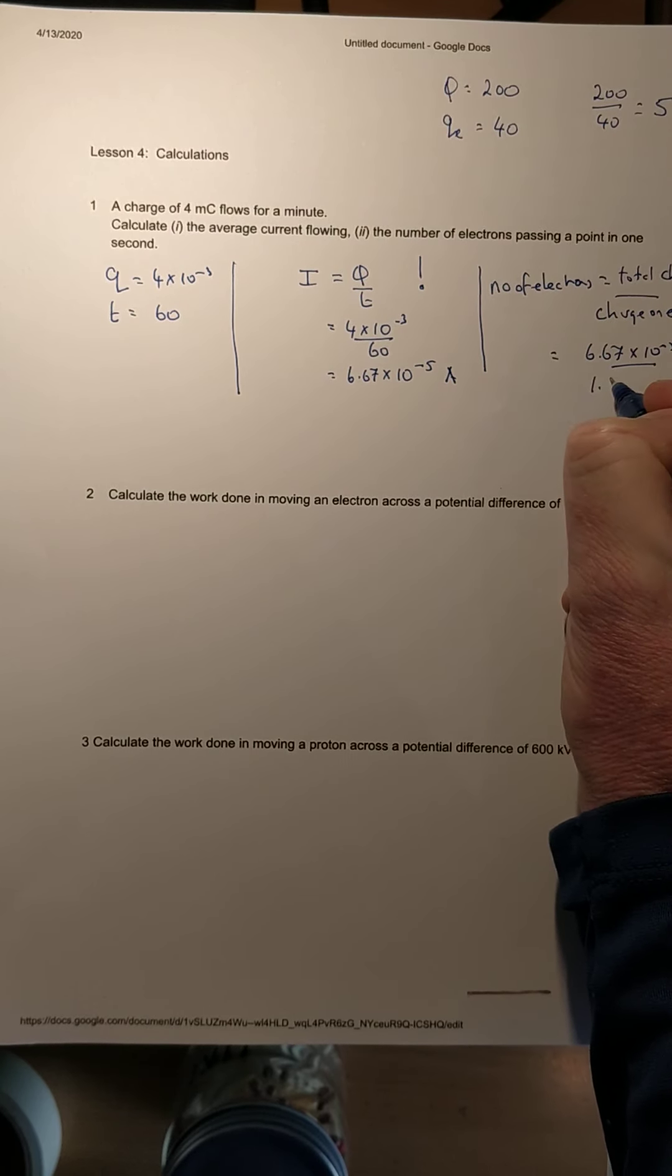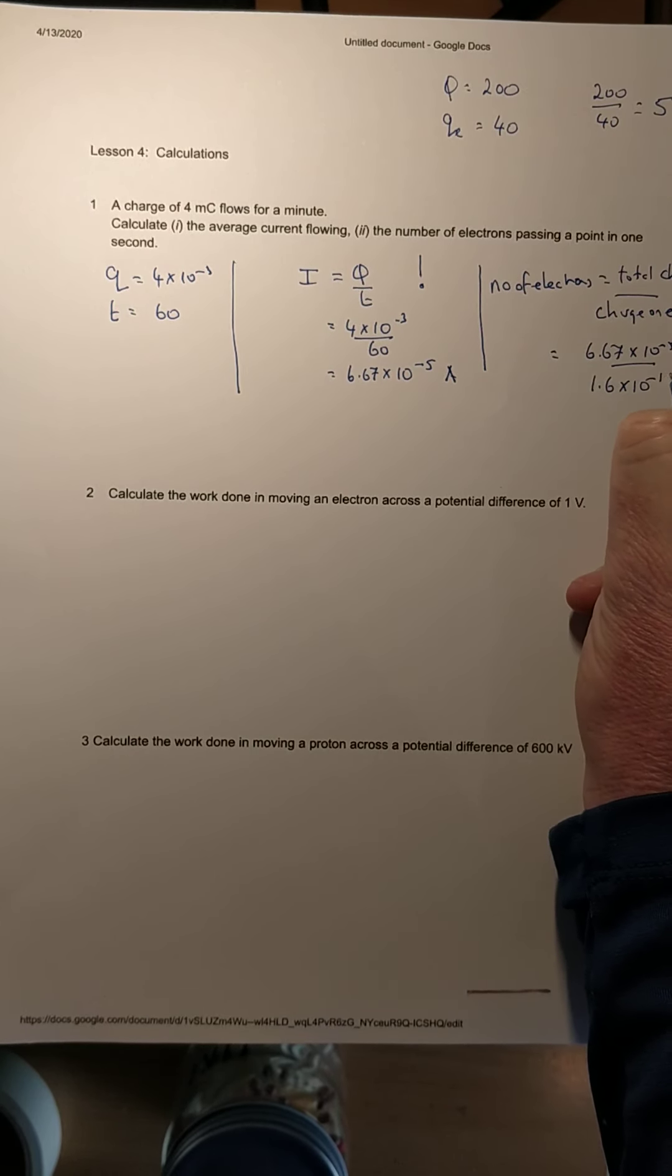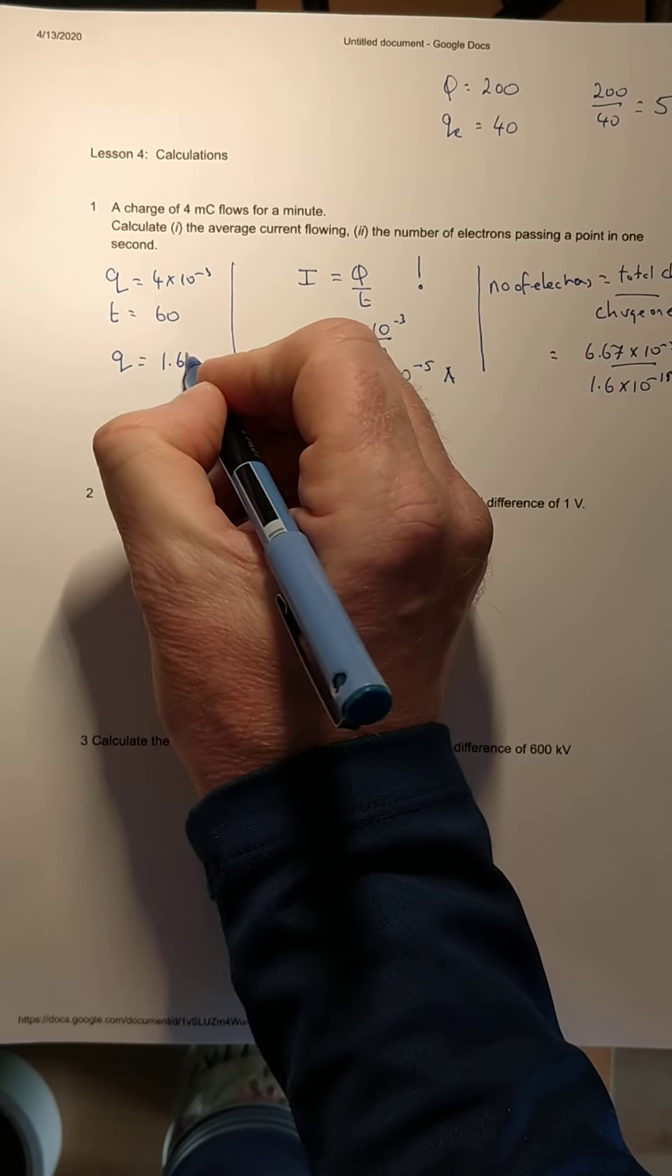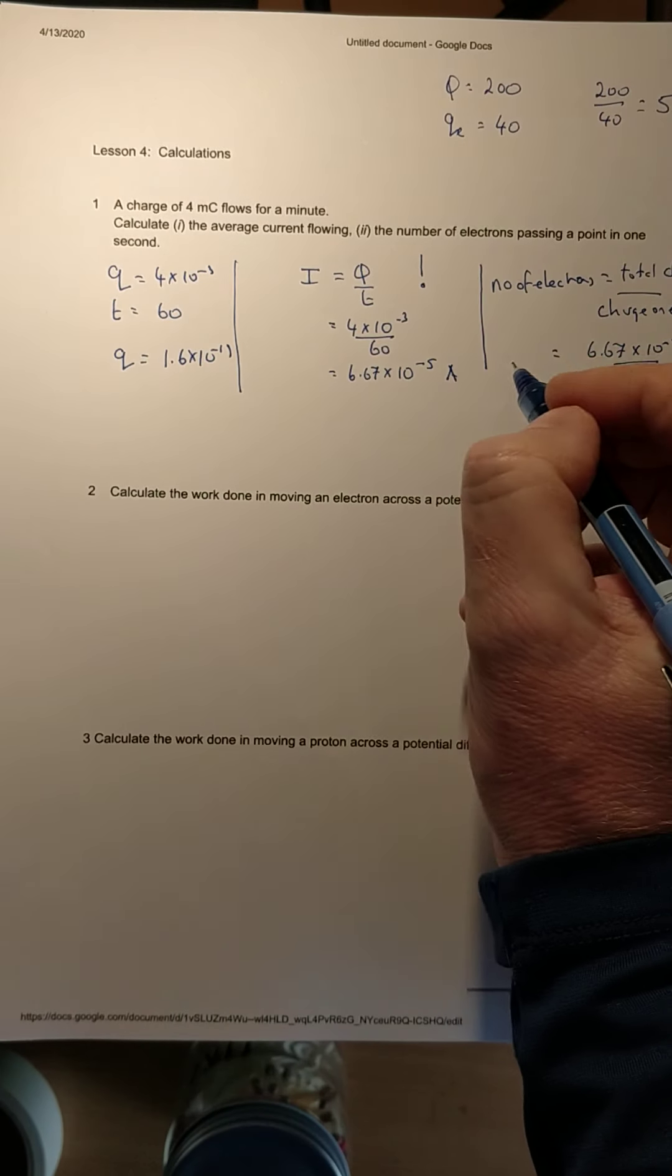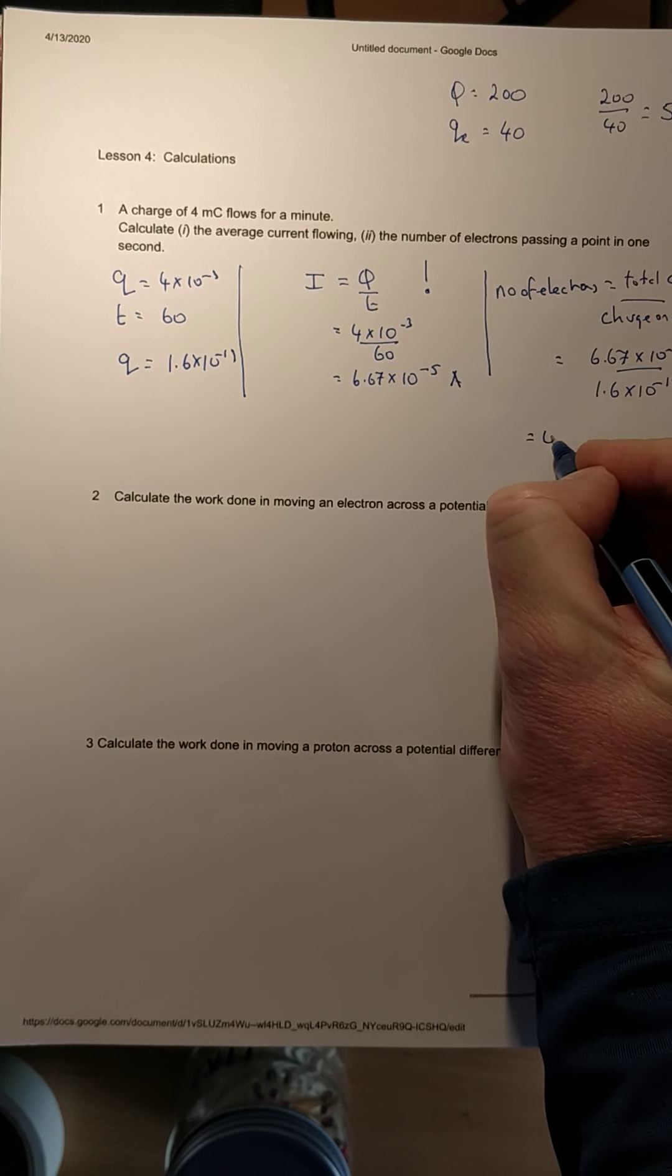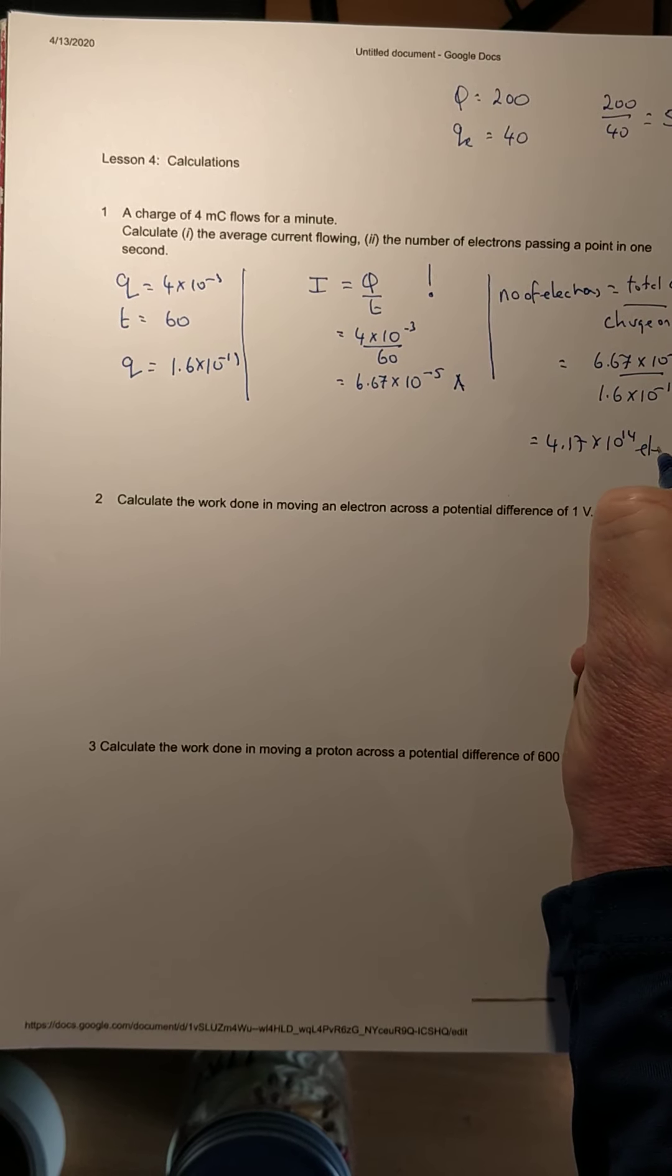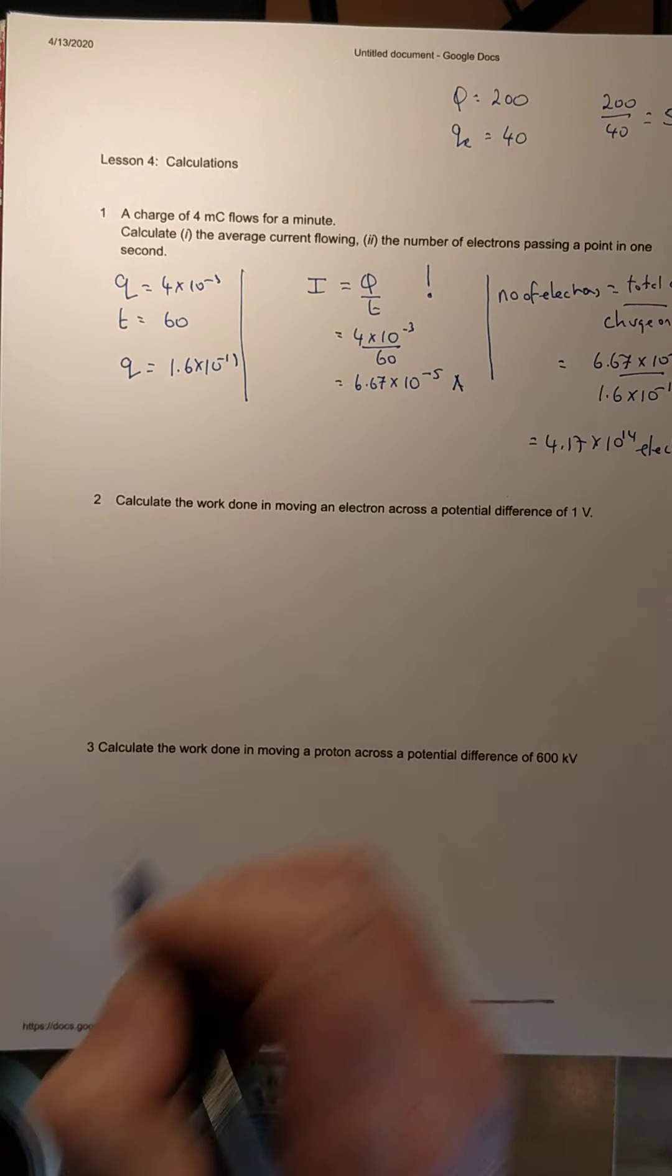We're so used to the charge on the electron at this stage. We'll get an answer of 4.17 × 10¹⁴ electrons. A lot of electrons.